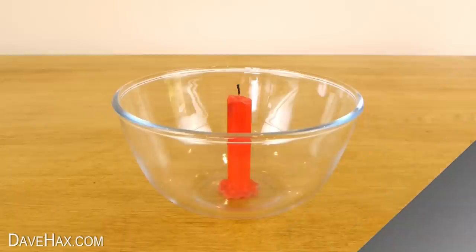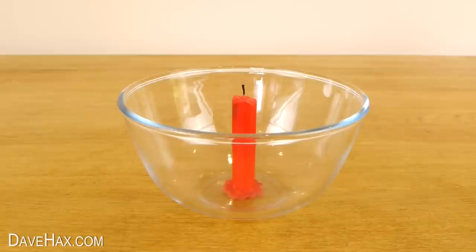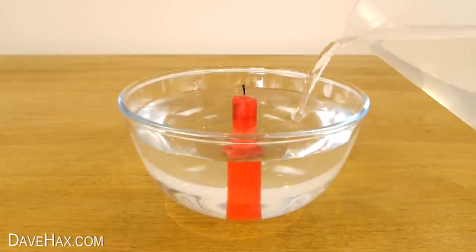Let it dry for five minutes and you should find the candle stuck firmly into the bowl. Next, take a jug of water and fill up the bowl until it's just under the top of the candle.